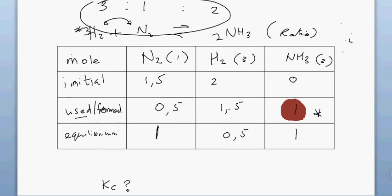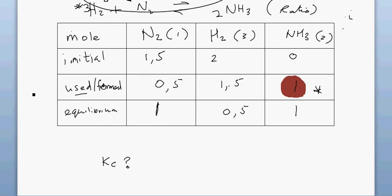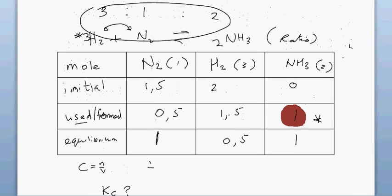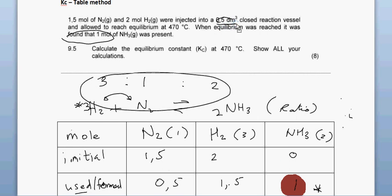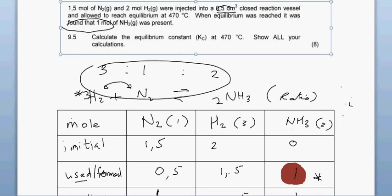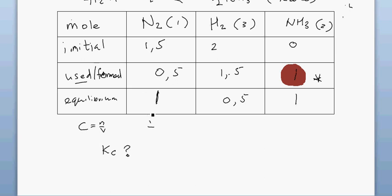Since Kc involves concentrations, the next step is to calculate the concentrations at equilibrium. The volume given is 0.5 dm³. Concentration of N₂ = 1 ÷ 0.5 = 2 mol/dm³. Concentration of H₂ = 0.5 ÷ 0.5 = 1 mol/dm³. Concentration of NH₃ = 1 ÷ 0.5 = 2 mol/dm³.